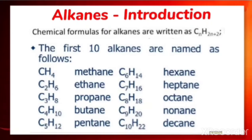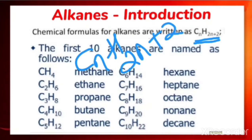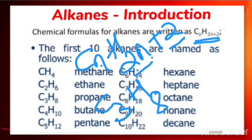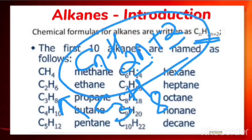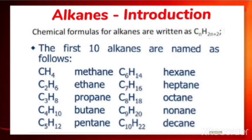You can generate the molecular formula using CnH2n+2. For example, for 3 carbons, n=3, so the number of hydrogens is 2×3+2 = 8, giving us the formula C3H8. You can use this formula to generate molecular formulas for different alkanes.